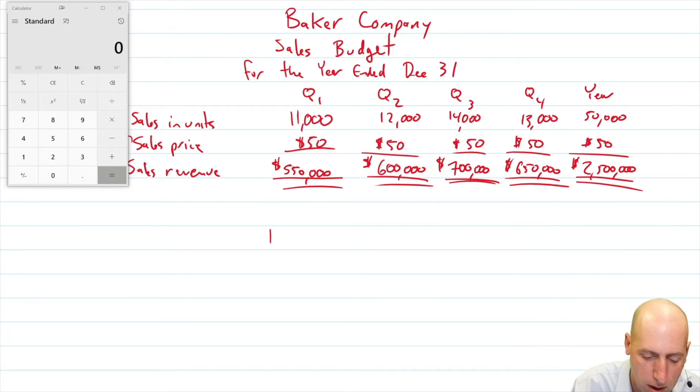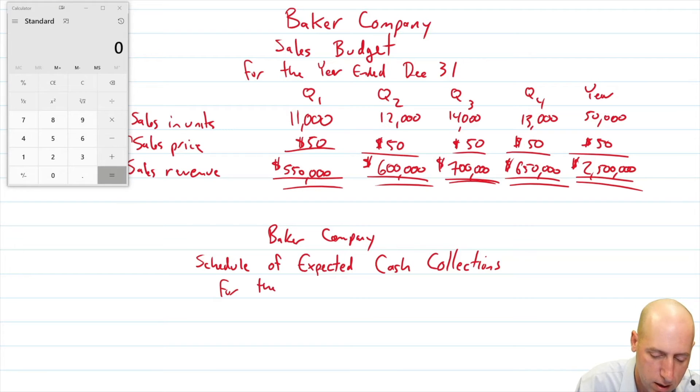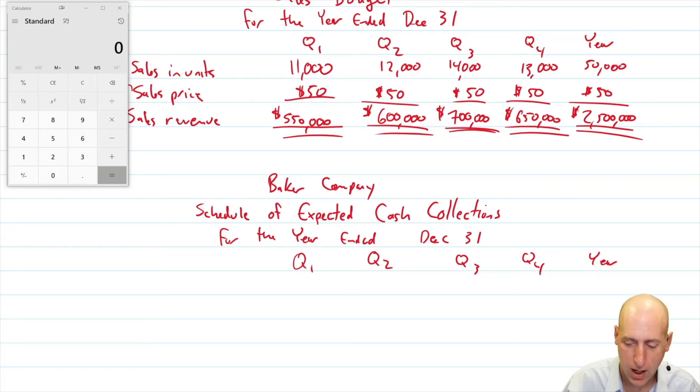Here we go. We need a three line title, name of the company, Baker Company. We need the name of the schedule. So it's a bit longer. Schedule of expected cash collections. And again, this is for the year ended, December 31st. And just like with the other one, we're going to have the same kind of heading Q1, Q2, Q3, Q4, and a total column, which is for the year. And I'll be very particular about this. I don't call this total, I call it for the year for the quarter. And you'll see in future budgets, it really does matter how we say that it is not a total column. It's a for the year column.